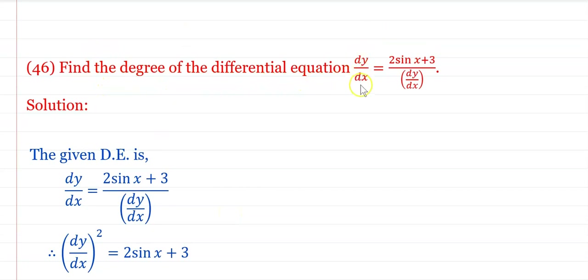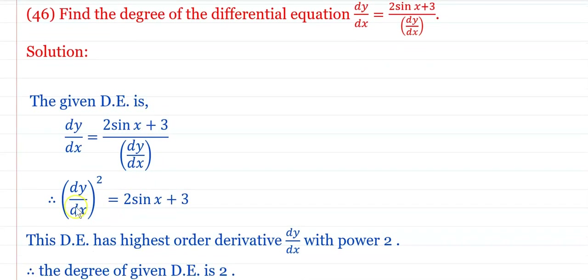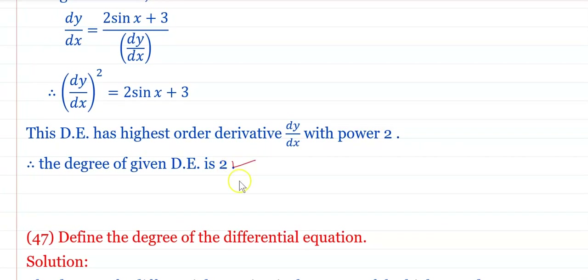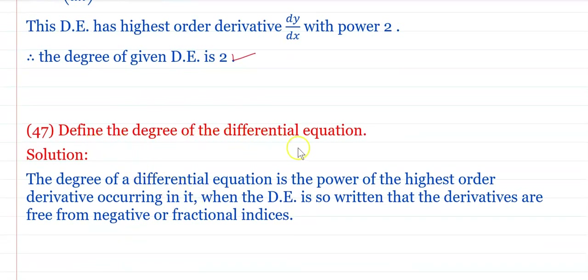Find the degree of dy/dx = 2 sin x + 3/(dy/dx). By cross multiplication: (dy/dx)² = 2 sin x + 3. The highest order derivative dy/dx has power 2, therefore the degree is 2. The degree of a differential equation is the power of the highest order derivative occurring in it, when written free from fractional or negative indices.